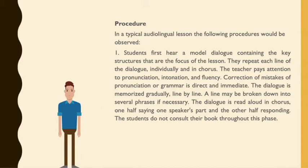In a typical audiolingual lesson, the following procedures would be observed. First, students hear a model dialogue containing the key structures that are the focus of the lesson. They repeat each line of the dialogue individually and in chorus. The teacher pays attention to pronunciation, intonation, and fluency. Correction of mistakes is direct and immediate. The dialogue is memorized gradually, line by line, and may be broken into phrases if necessary. Students do not consult their book during this phase.